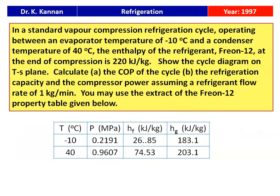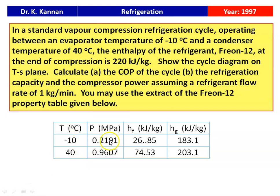The next question is from the 1997 question paper. In a standard vapor compression refrigeration cycle operating between an evaporator temperature of minus 10 degree Celsius and condenser temperature of 40 degree Celsius, the enthalpy of refrigerant Freon-12 at the end of compression is 220 kJ/kg. Calculate the COP of the cycle, the refrigeration capacity, and the compressor power assuming a refrigerant flow rate of 1 kilogram per minute.